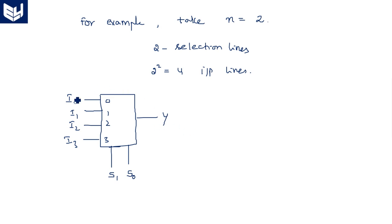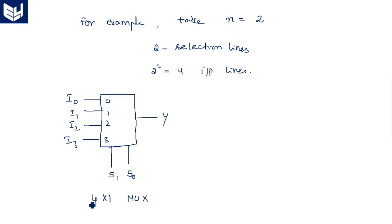This multiplexer with 4 inputs and 1 output is known as a 4 by 1 mux. The 4 indicates the number of inputs and 1 indicates the output. We write it as 2 power 2 by 1 — the number of inputs for a multiplexer is always in powers of 2. So 2 power 2 means 2 selection lines and 4 inputs.